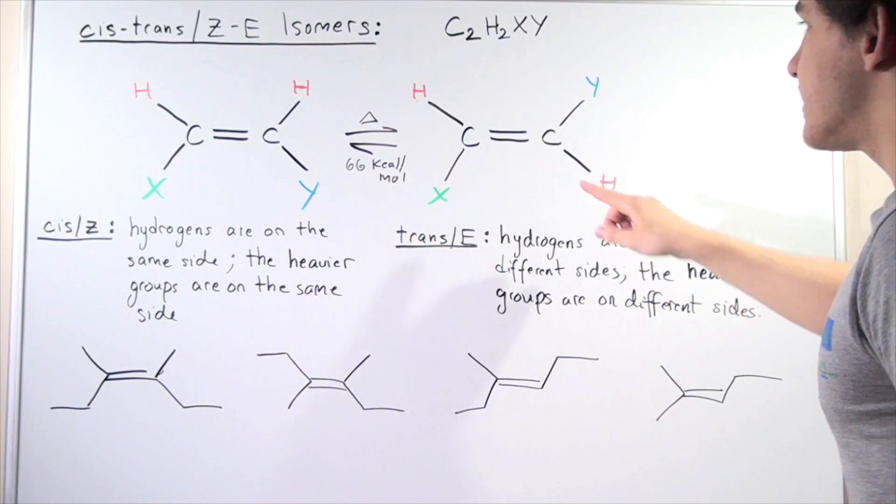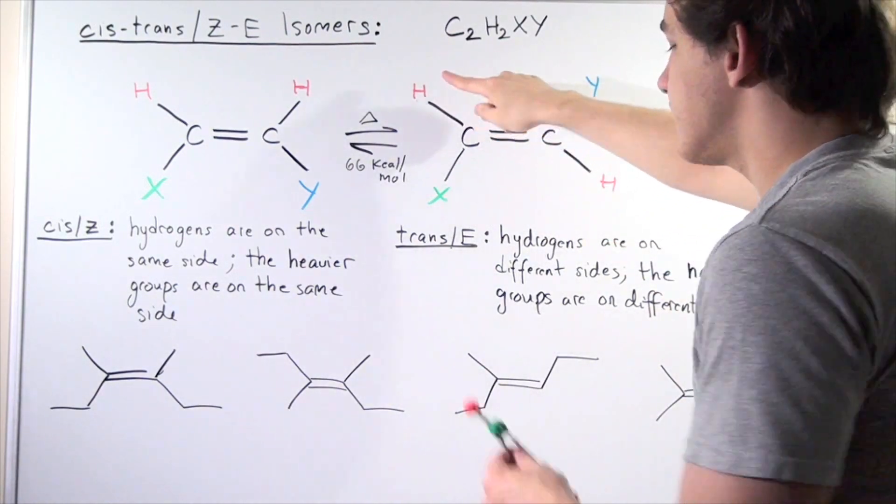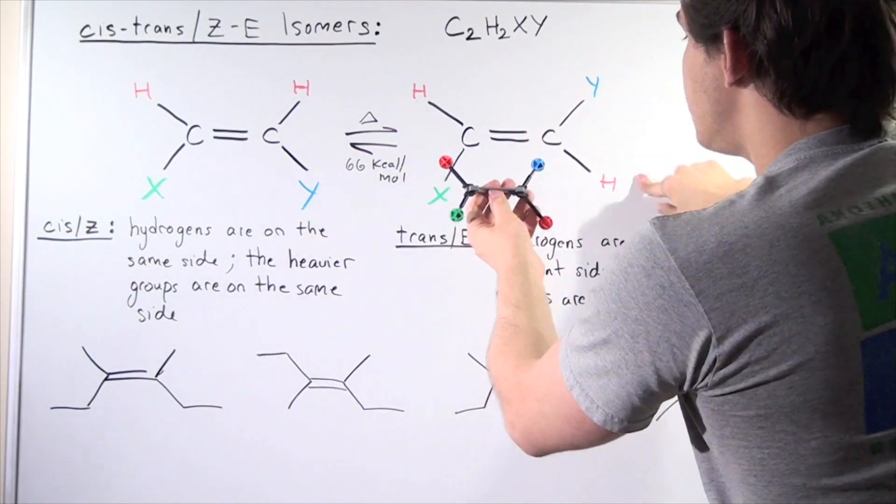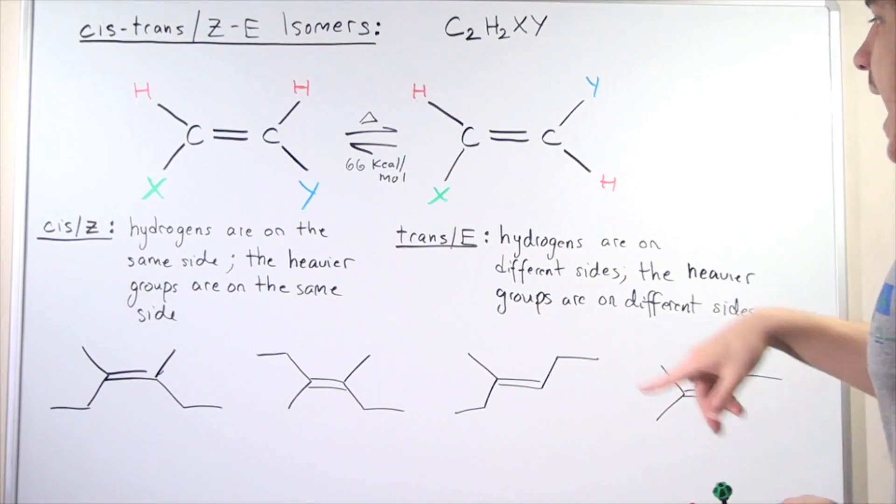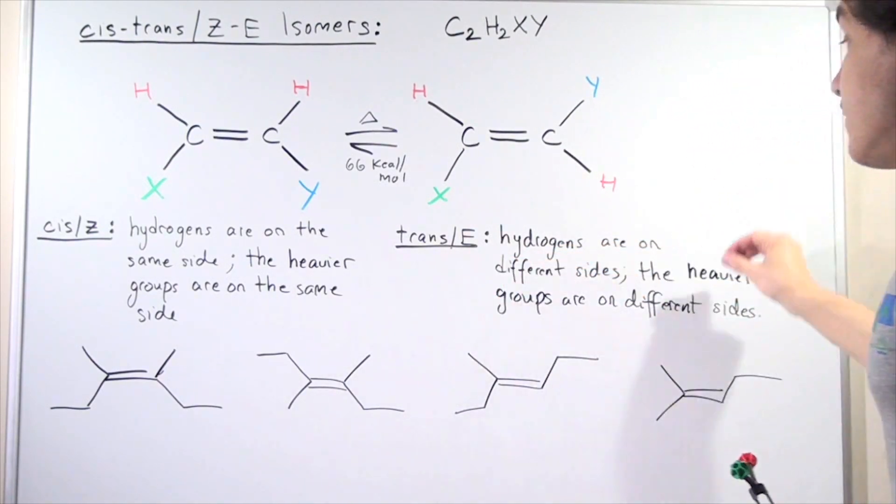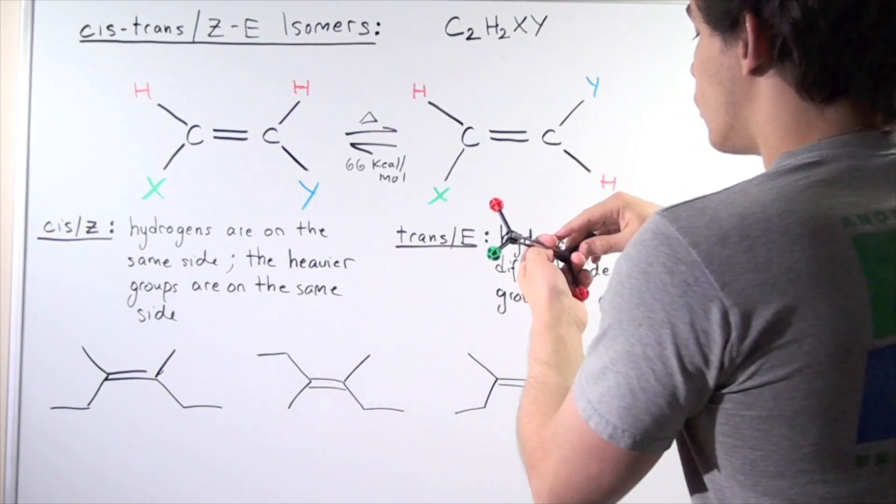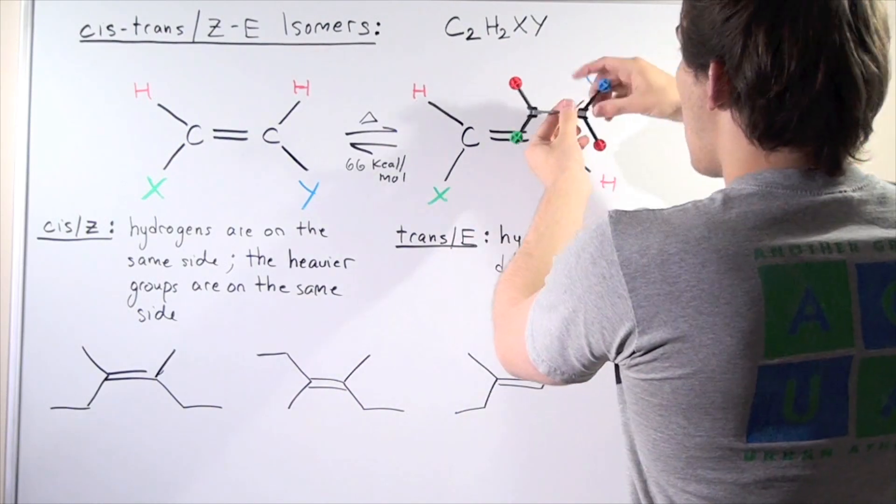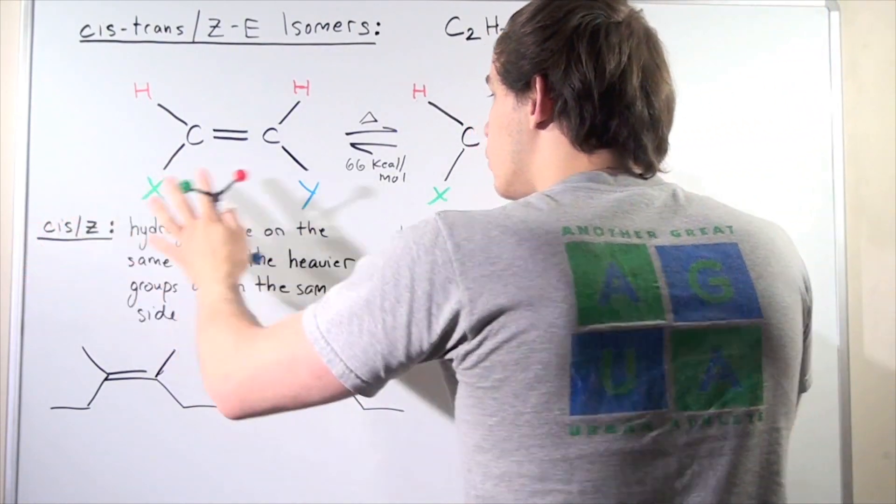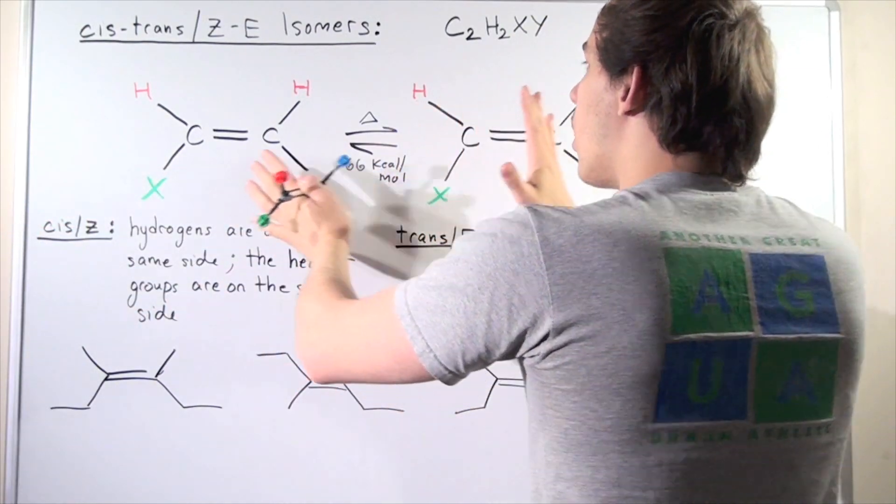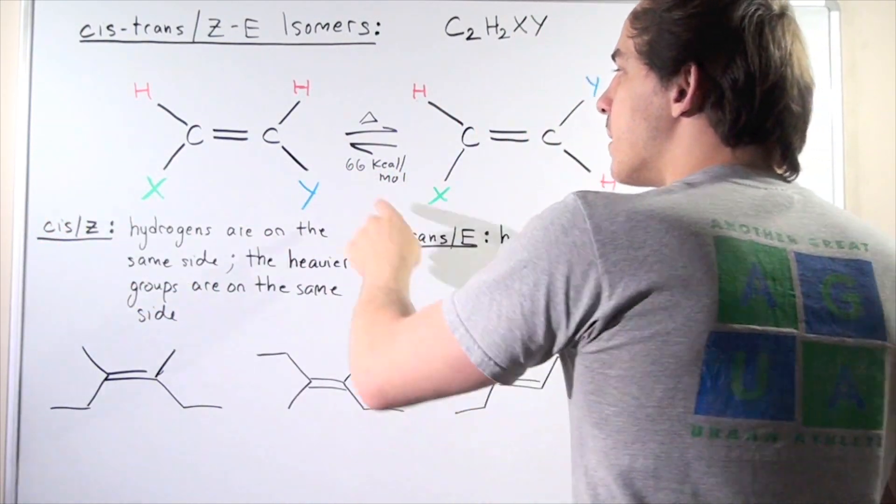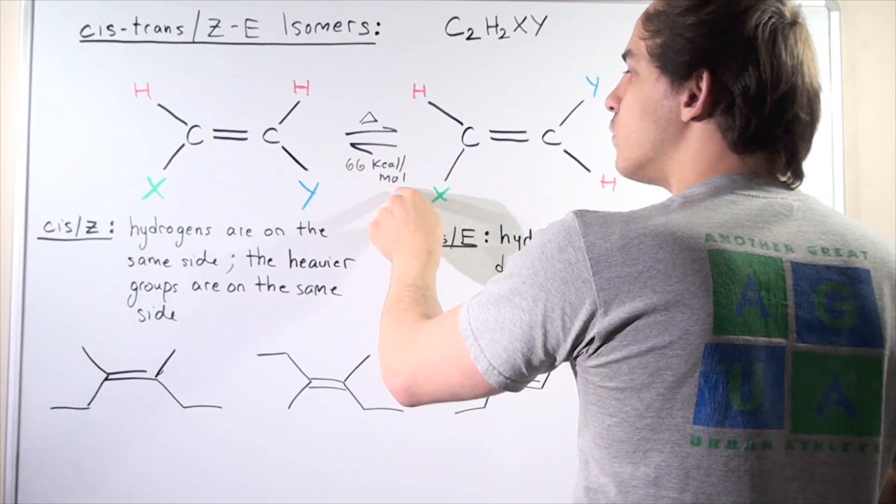So trans is defined the following way. Hydrogens are on different sides of the plane. Different sides, I mean H and H, different sides. And E is defined as the heavier groups are on different sides. So once again, our X and Y are on different sides. Now, these two guys are isomers to one another, and they're separated by 66 kilocalories per mole.